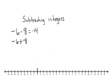You start at negative 6, and because 8 is negative, you're going to go in the negative direction, and you still will land on negative 14, and the answer is still negative 14. It's just whichever way makes more sense to you.